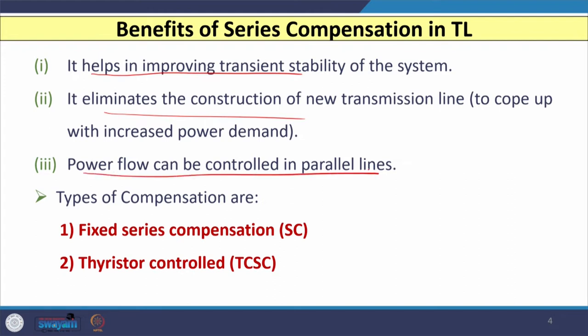The third advantage is that power flow can be controlled in parallel lines if a series capacitor is installed. There are two types of compensation devices we can install: the first is fixed series compensation, known as SC or series capacitor, and the second is the thyristorized controlled series capacitor, known as TCSC. We will discuss each one by one.